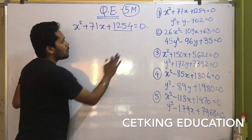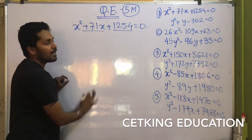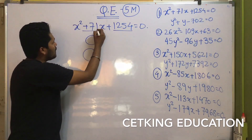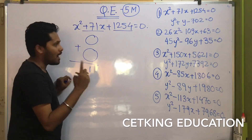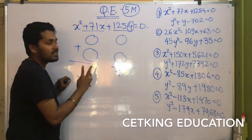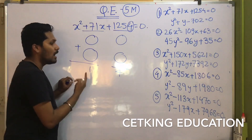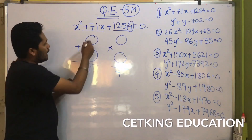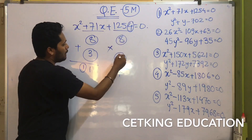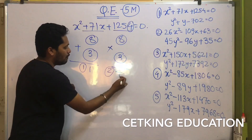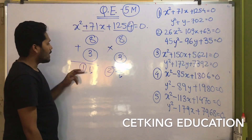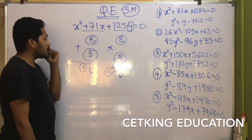Now see, this should be your multiplication and 71 should be your summation. You want to find 2 numbers whose addition is 1 and whose multiplication is 4 — the unit place digits. 8 plus 3 gives you 11, so 1 will be carry, and 8 multiplied by 3 gives you 24, which gives unit place 4. So you have already got your unit place digits: 8 and 3.